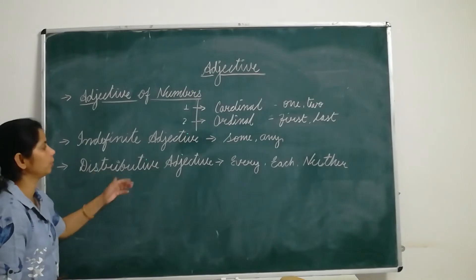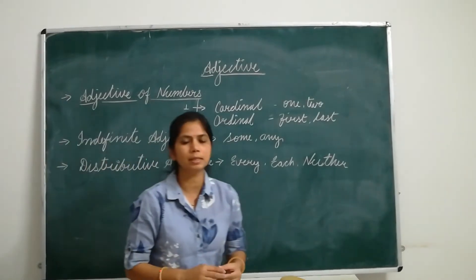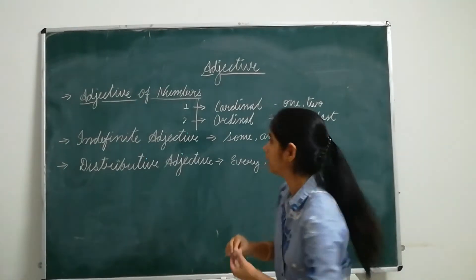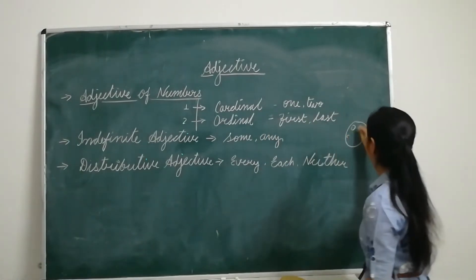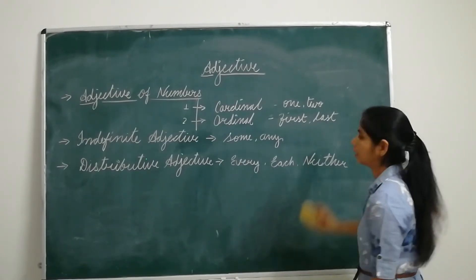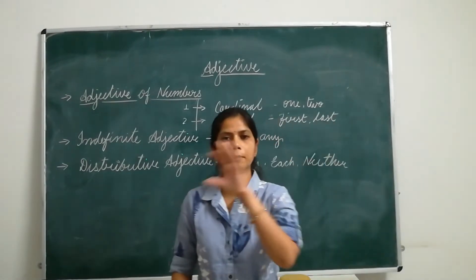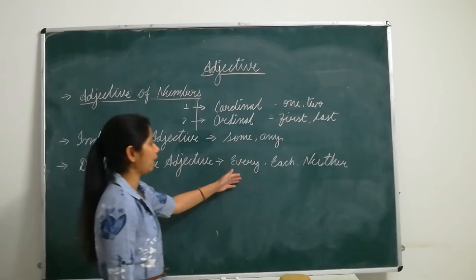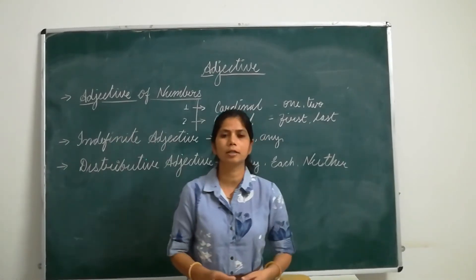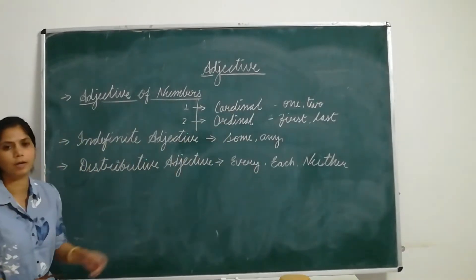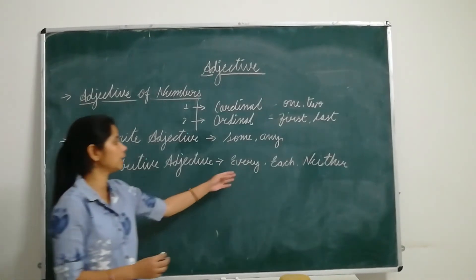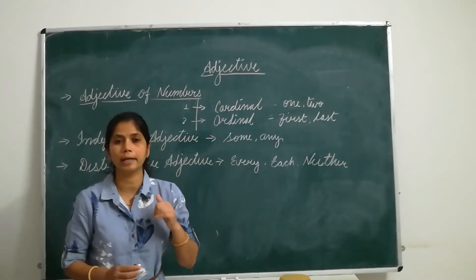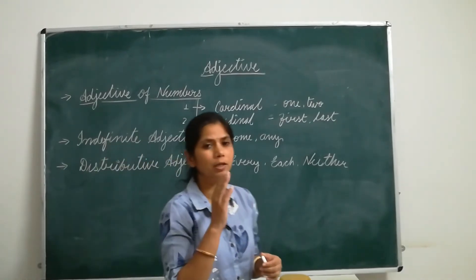The next type of adjective is the distributive adjective. 'Distribute' means when we talk about every single one — not in a group, but about each single individual unit. Adjectives like 'every', 'each', and 'neither' are called distributive adjectives. When we use these adjectives before nouns, for example 'each boy' or 'every student', it means we are talking about individuals.